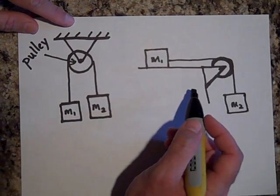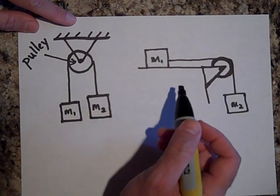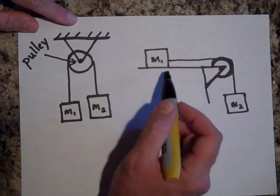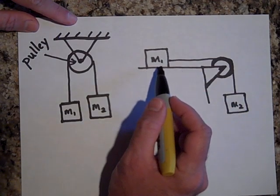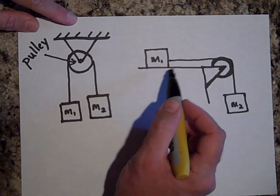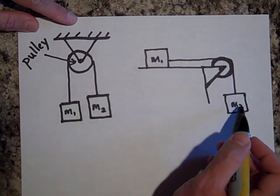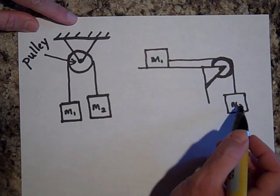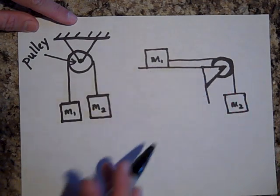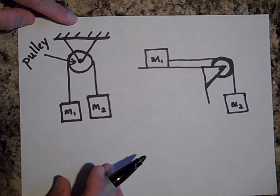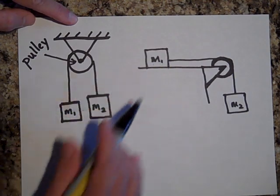With this one, this is a similar system except now this is on a table. It might be a frictionless table or maybe a table that has friction. But then a string goes over a pulley and is attached to this M2. So when M2 descends, M1 goes across the table. You probably did a couple labs on these things last year.